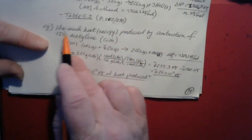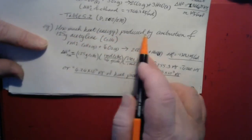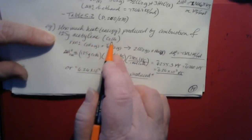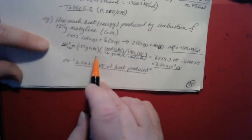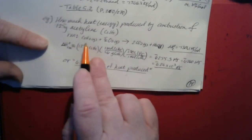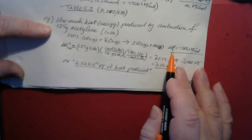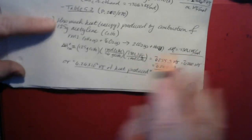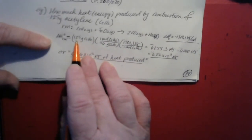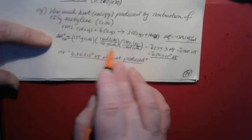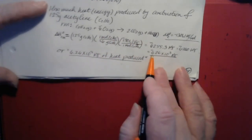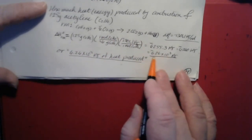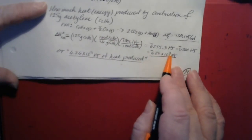A practical application: how much energy is produced by combustion of 125 grams of acetylene, C2H2? You can look up the standard enthalpy of combustion for acetylene, which is negative 1,301.1 kilojoules per mole. Then take your 125 grams of acetylene, divide by the molar mass of 26 grams per mole to find how many moles you have, and multiply by the kilojoules per mole. We end up with negative 6,260 kilojoules, or negative 6.26 × 10³ kilojoules.